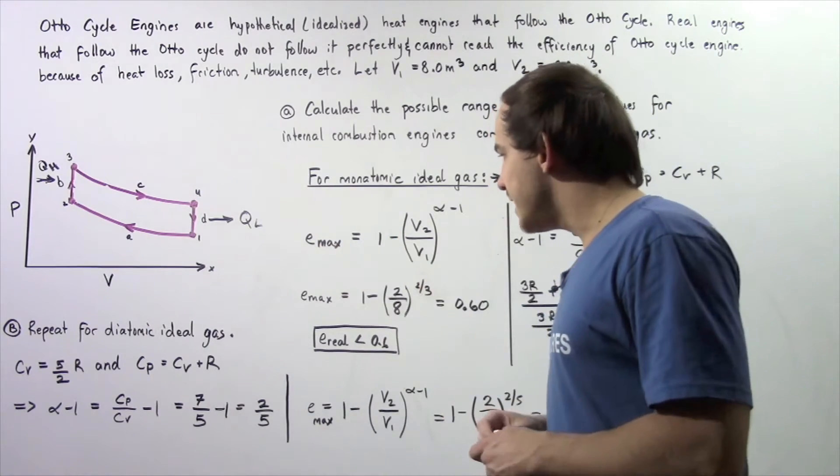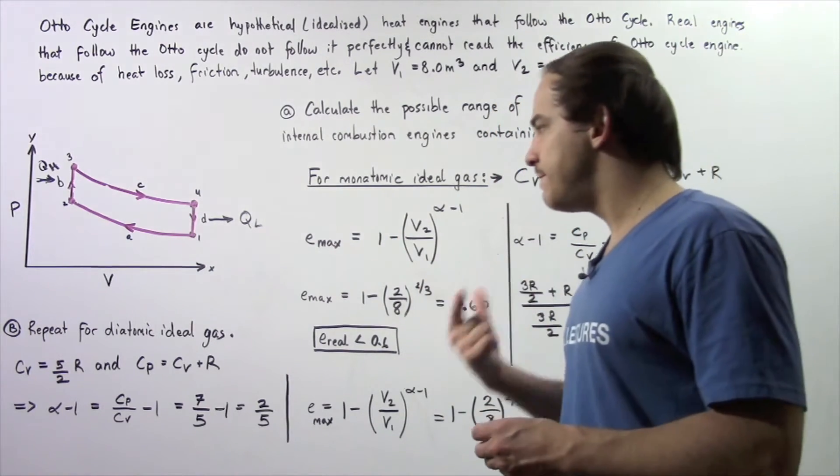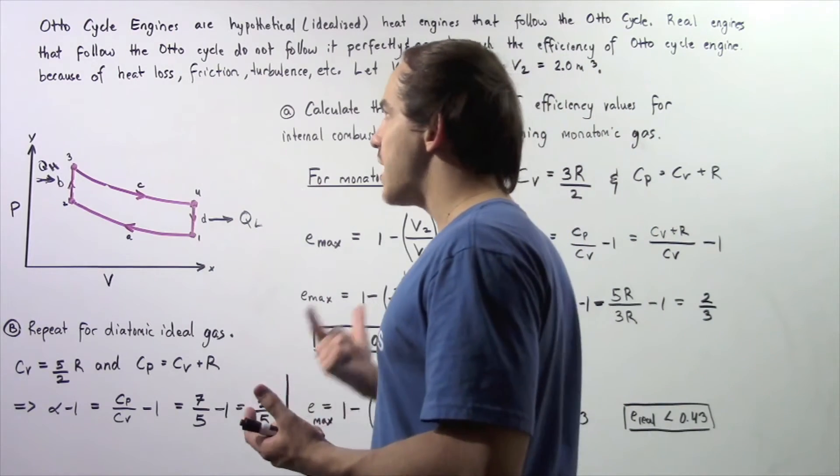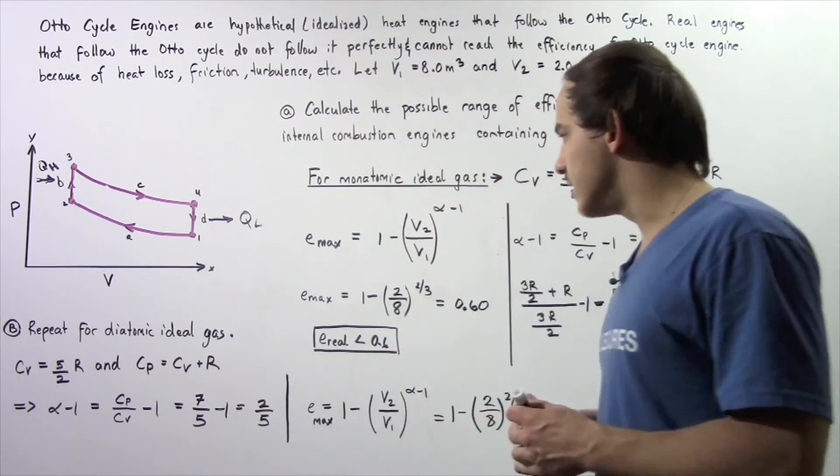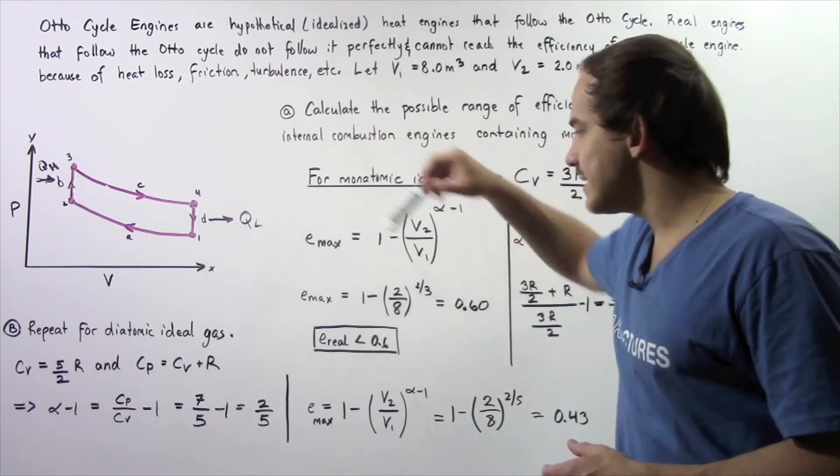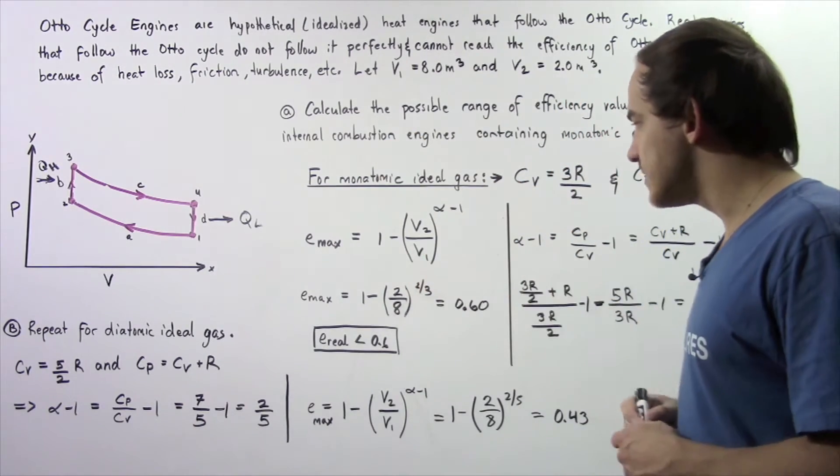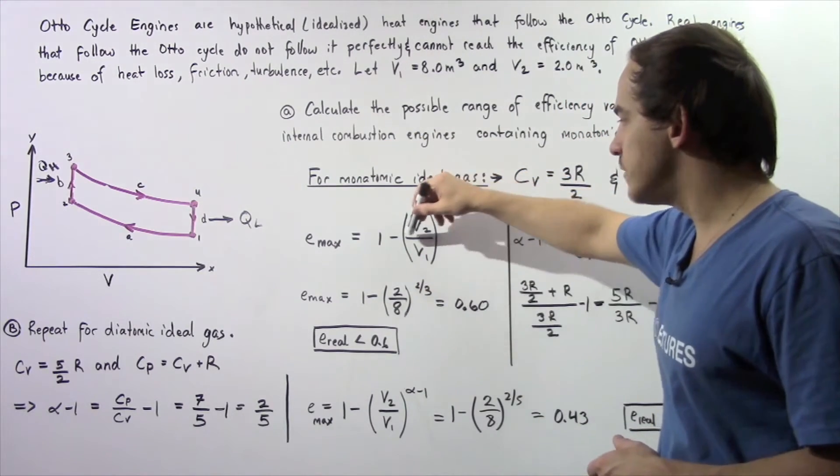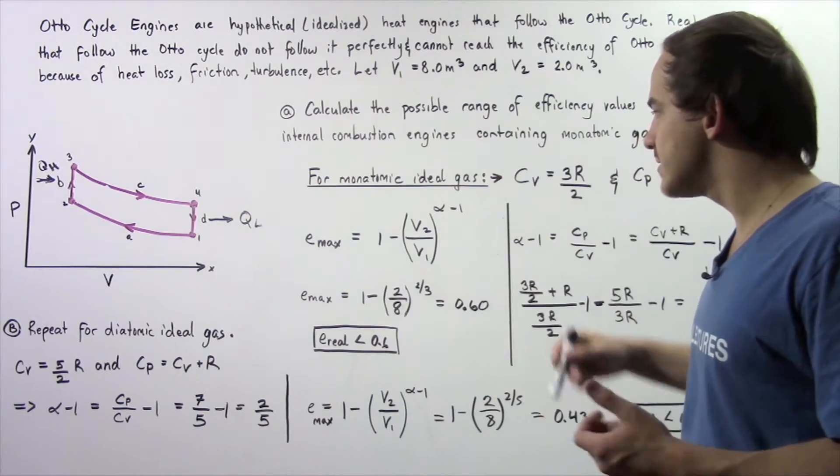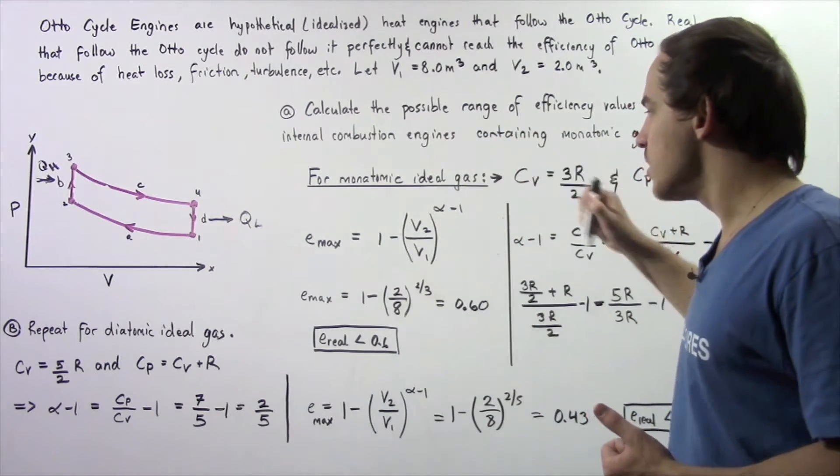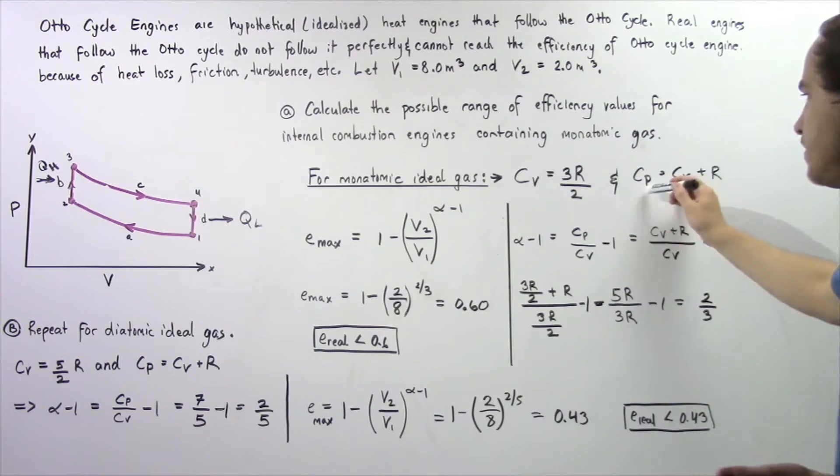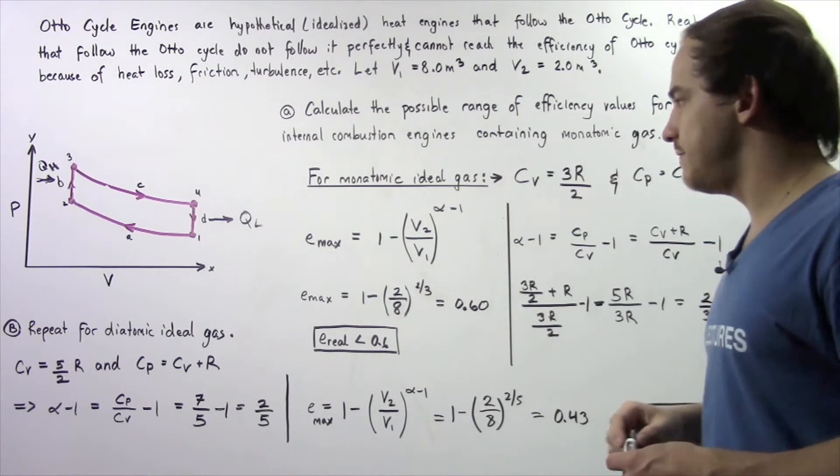Now let's begin by recalling the equation for the efficiency of a heat engine that obeys the Otto cycle. So the Emax is equal to 1 minus the ratio V2 divided by V1 raised to alpha minus 1 where alpha is simply the ratio Cp divided by Cv.